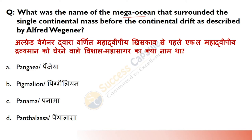What was the name of the mega ocean that surrounded the single continental mass before continental drift, as described by Alfred Wegener? Answer is D — Panthalassa. The super continent was named Pangea, and the mega ocean surrounding it was called Panthalassa.